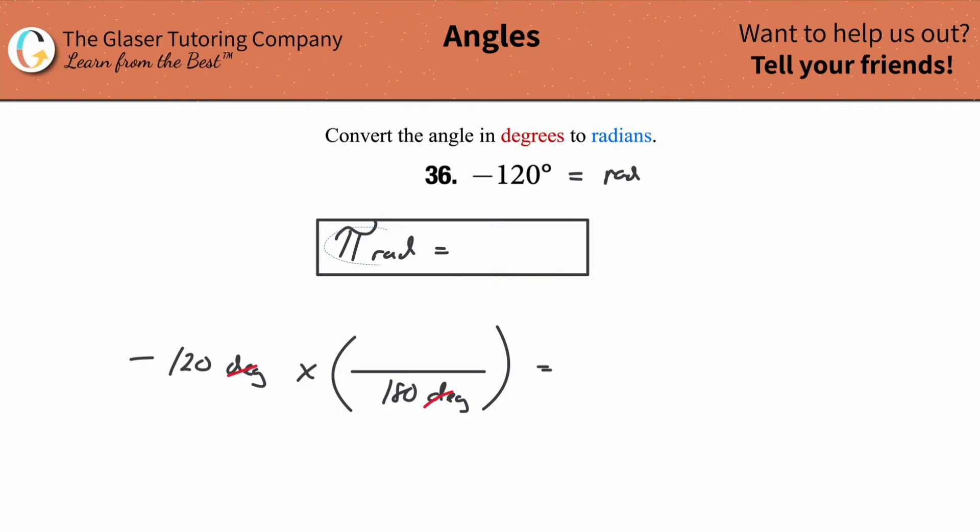Because we don't want degrees in our answer, we want radians. So therefore, I'm going to take my radian measurement and plug it into the numerator now. Notice the radians will not cancel, and therefore my answer will be in terms of radians.